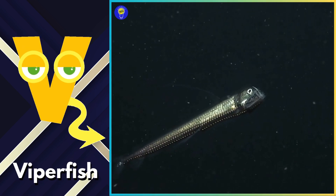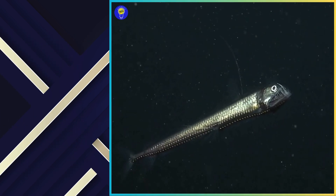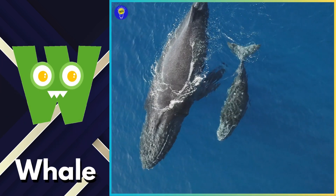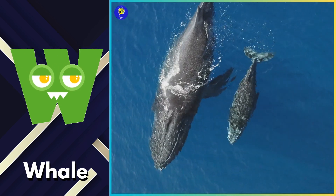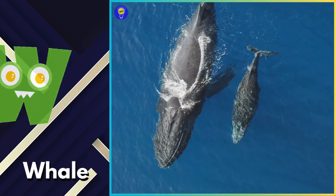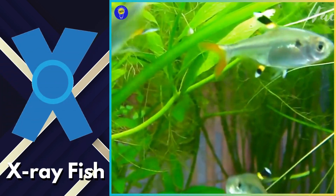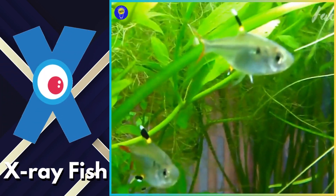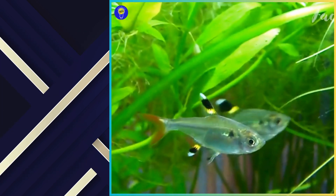V is for viperfish, v, v, viperfish. W is for whale, w, w, whale. X is for x-ray fish, ex, ex, x-ray fish.